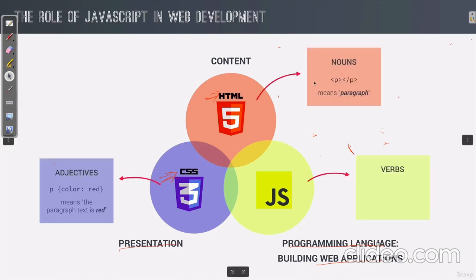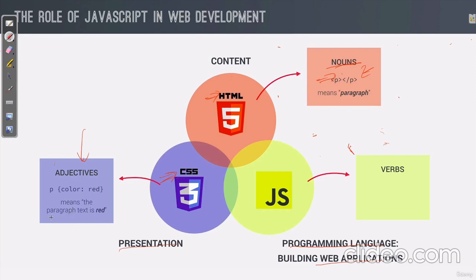You can relate this to English language grammar. HTML is like a noun — for example, in HTML, a paragraph tag p open, p close — that creates a paragraph. So HTML is the noun. CSS is like an adjective — just as in 'he is a good boy', 'good' is the adjective describing 'boy'. Similarly, CSS defines the quality — like a paragraph exists and the text color inside it will be red, defined by CSS.